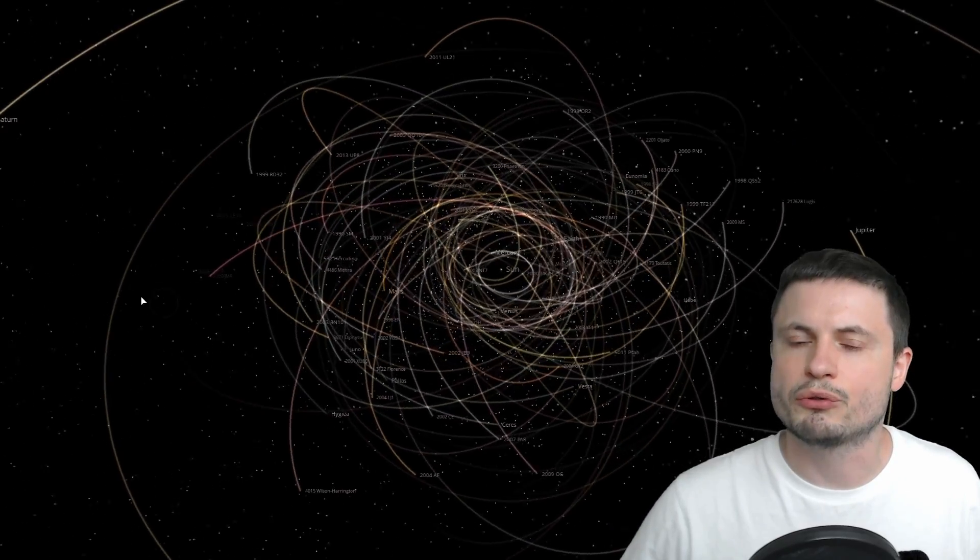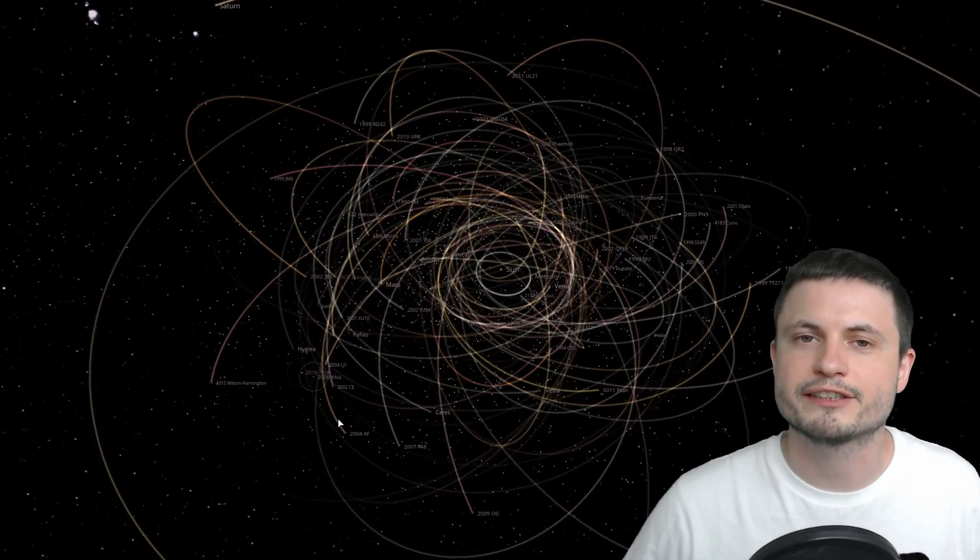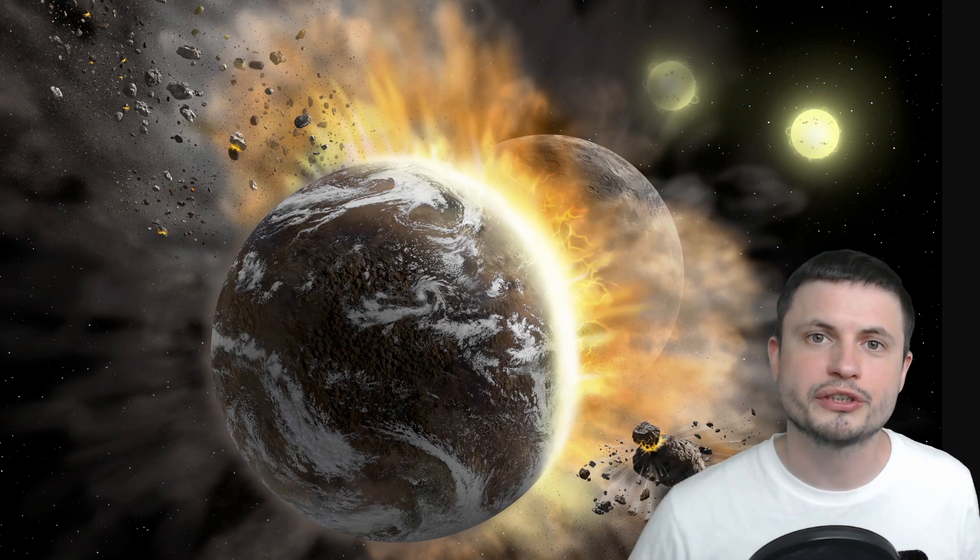Now, there might be another explanation for all of this, but so far, the best explanation is that about a thousand years ago, two Earth-like planets or terrestrial planets collided, created a very large amount of silicate dust, and all of this dust is now circulating around the star system, creating the temperatures and the patterns we're observing here from Earth.